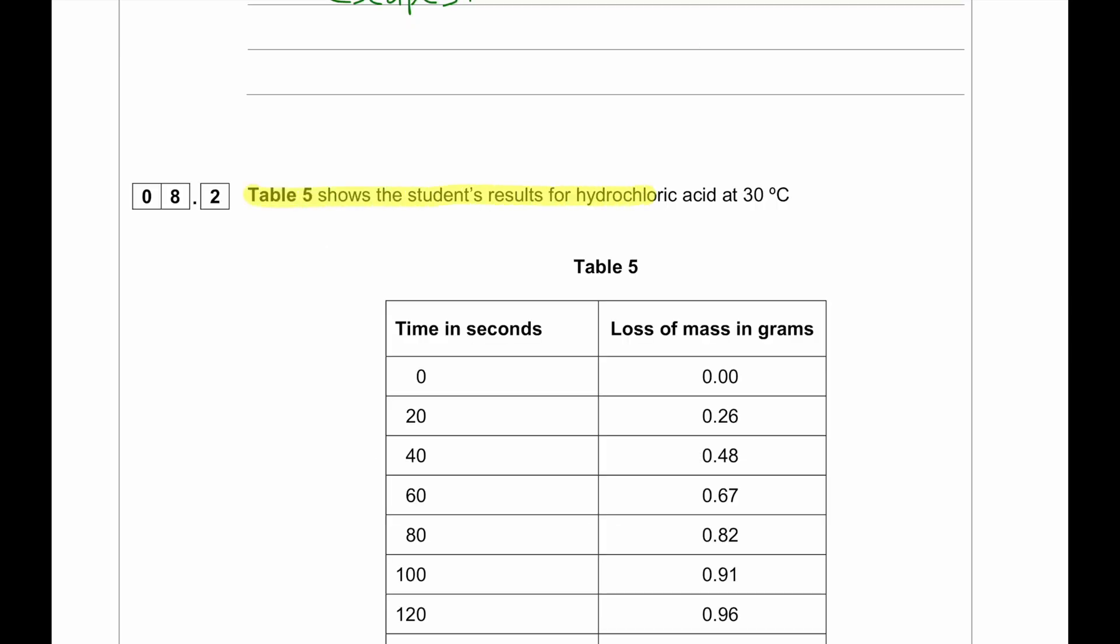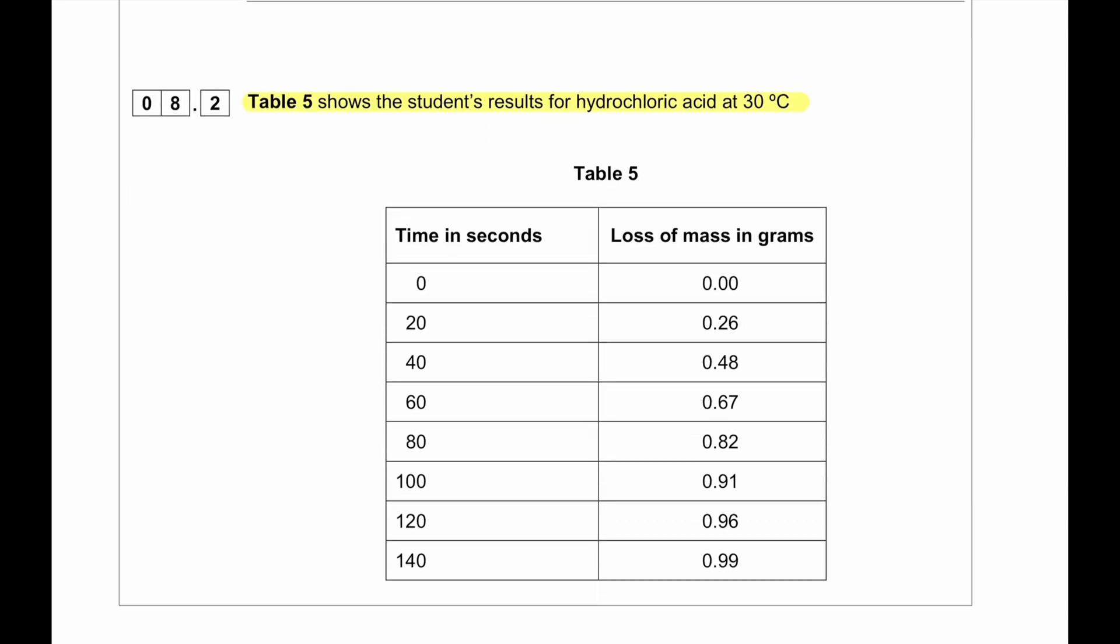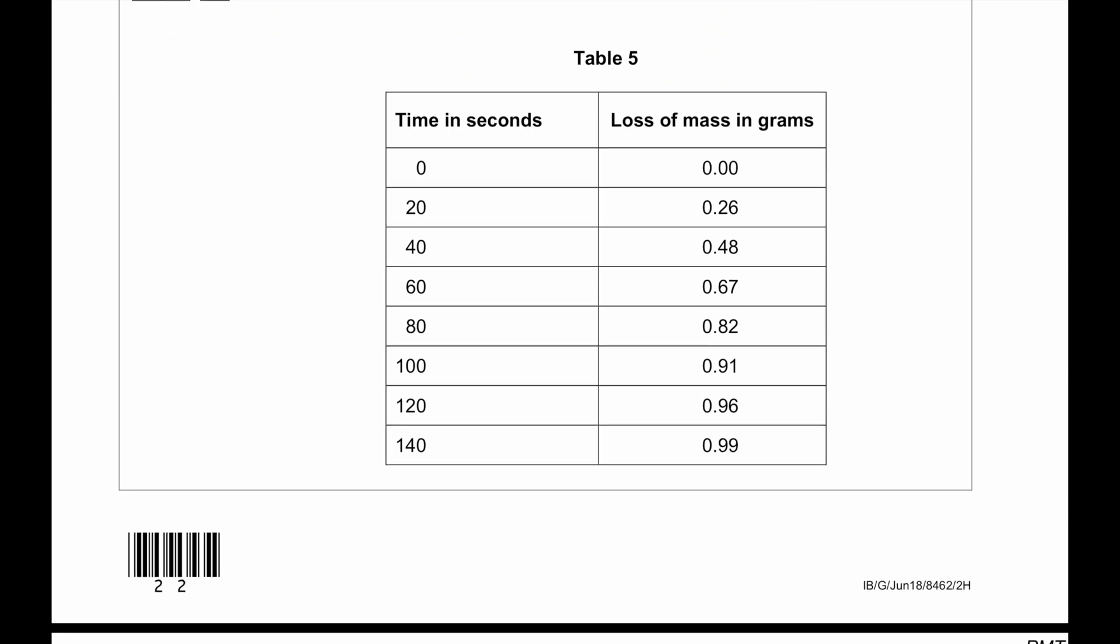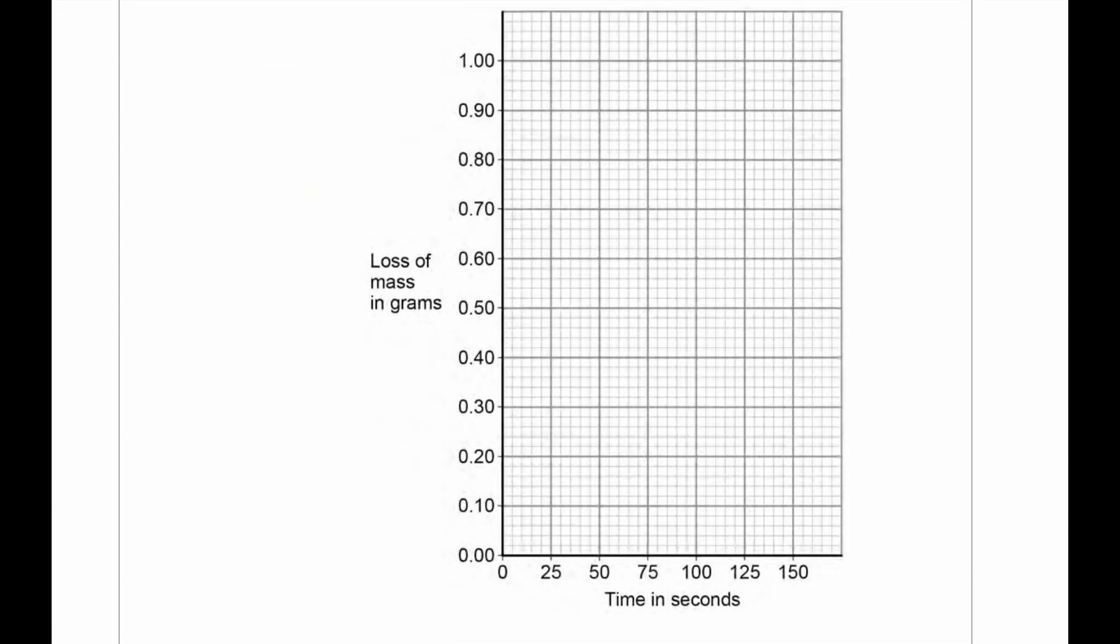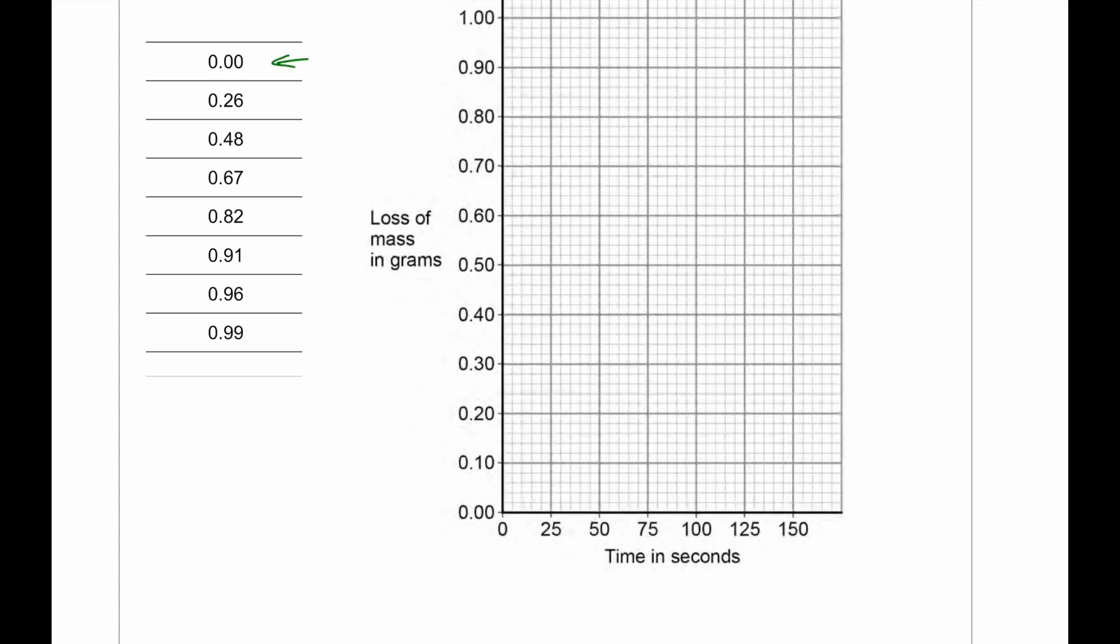Table 5 shows the student's results for hydrochloric acid at 30 degrees Celsius. We can see time in seconds and we have the amount of loss in grams. Now, draw a line of best fit to plot the data in table 5 from table 5 to this particular graph. At 0, we had 0 and at 20, we had 0.26. Then at 60, we had 0.67.